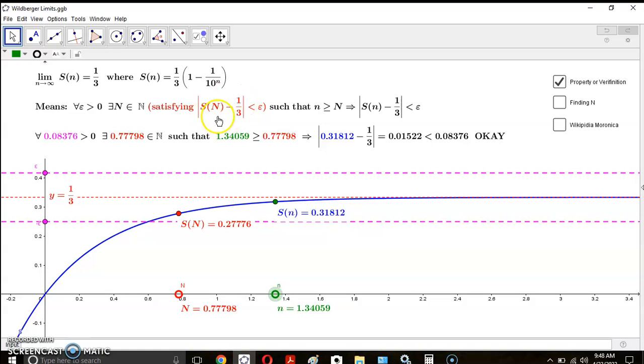There is this N, which is kind of circular because we're using the sequence itself, that can be found such that any greater n will mean the inequality is true. This is obviously a property of the limit; it's not a definition. You need the limit itself, and here's the limit: one-third. Look what happens here—this is the limit, one-third is the limit.